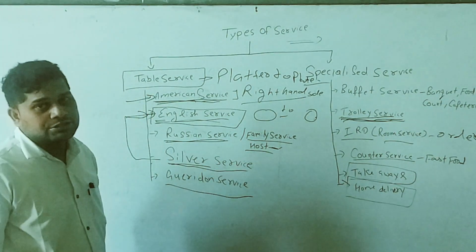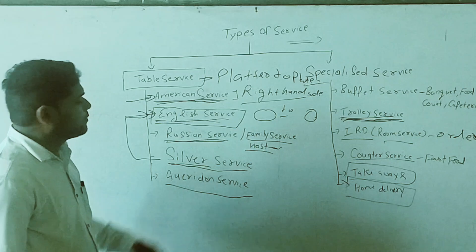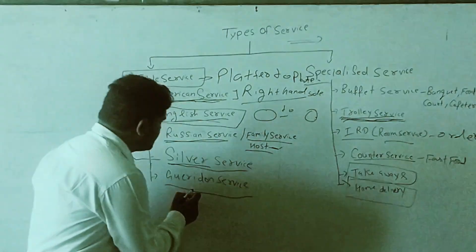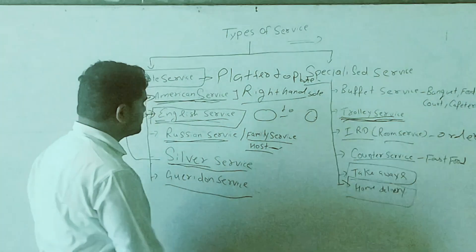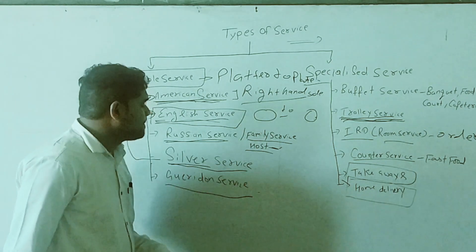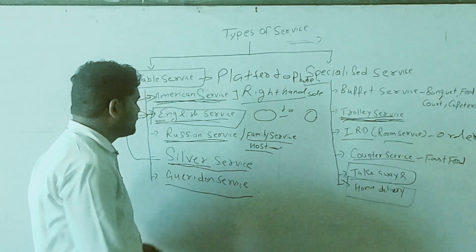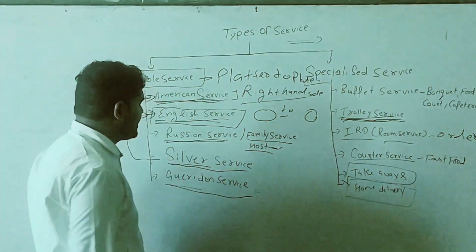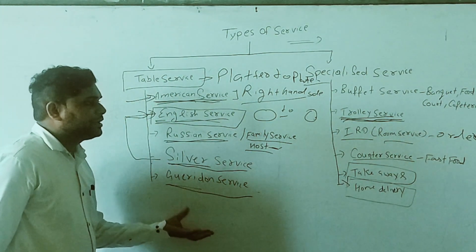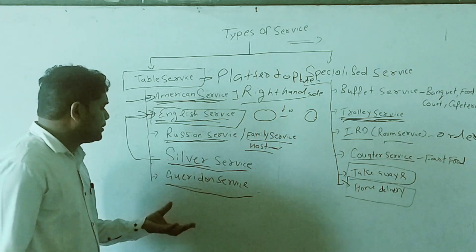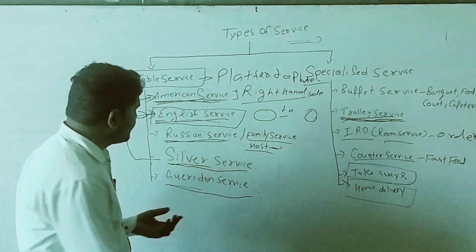And next one is Gueridon service. Gueridon service is a type of trolley service. In this service, you can use different types of trolleys. The major order will be served in a trolley, and small orders will be served in a tray. In this trolley, the food will be heated and then served.